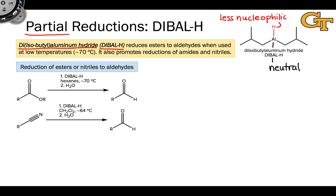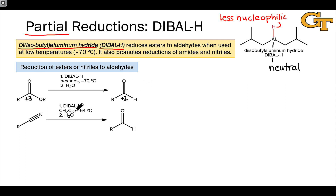DIBAL is a partial reduction reagent, meaning we can use it to step down from the plus 3 to the plus 2 oxidation level. For example, the use of DIBAL-H at negative 70 degrees C, followed by workup with water, converts an ester into an aldehyde. Similarly, at negative 64 degrees C, DIBAL converts a nitrile — in which the carbon is at the plus 3 oxidation level — again to an aldehyde upon aqueous workup.